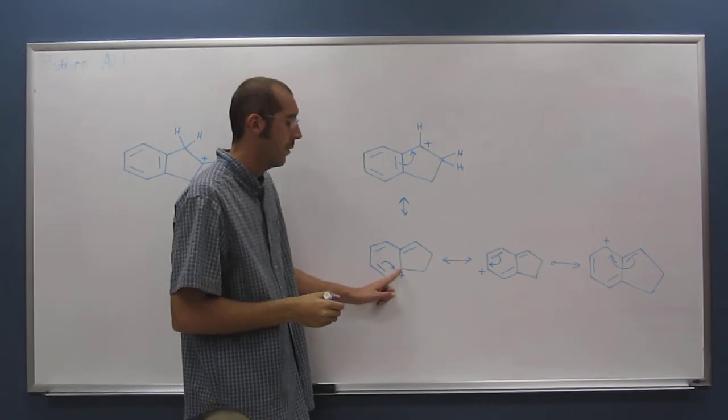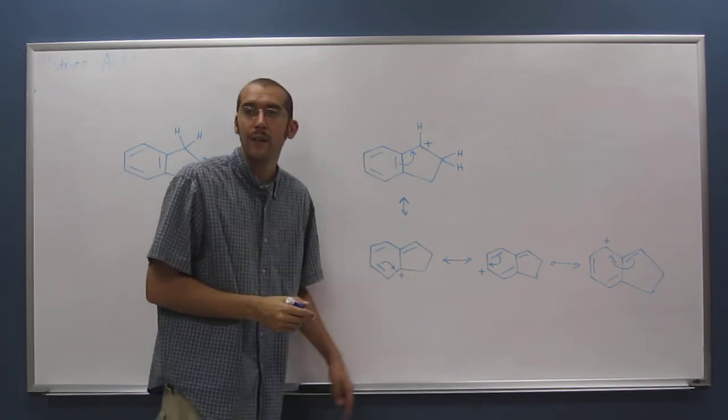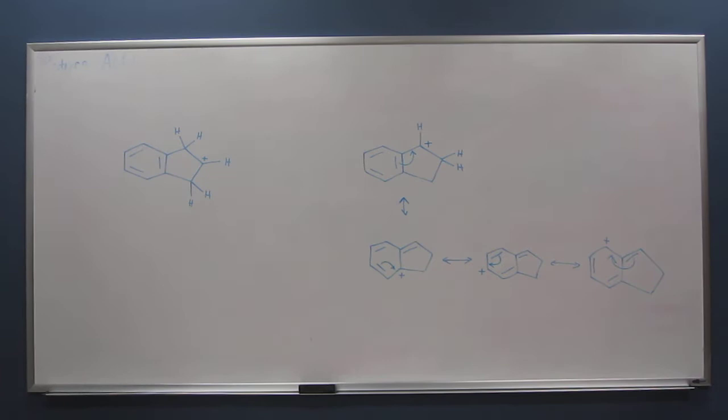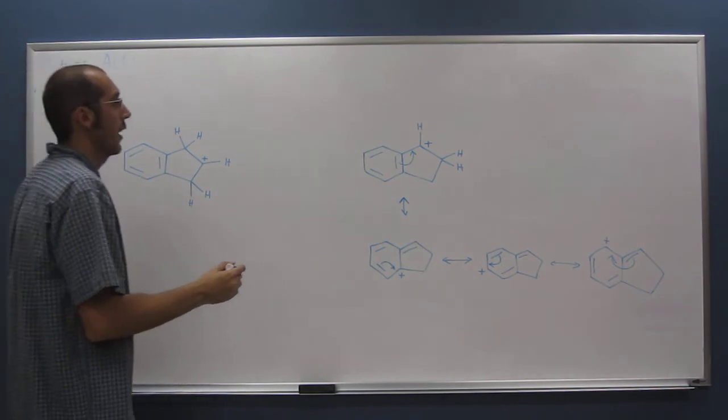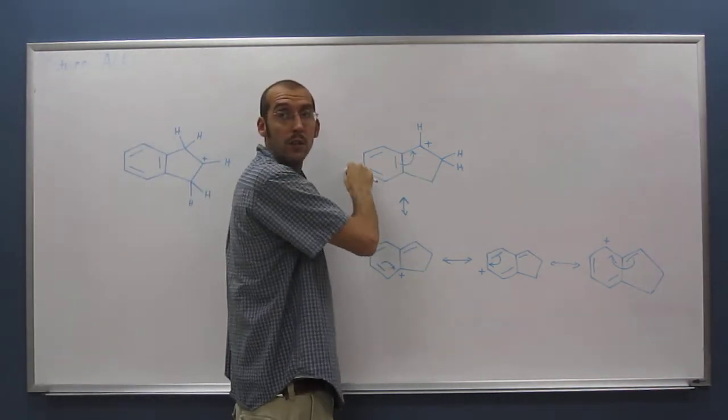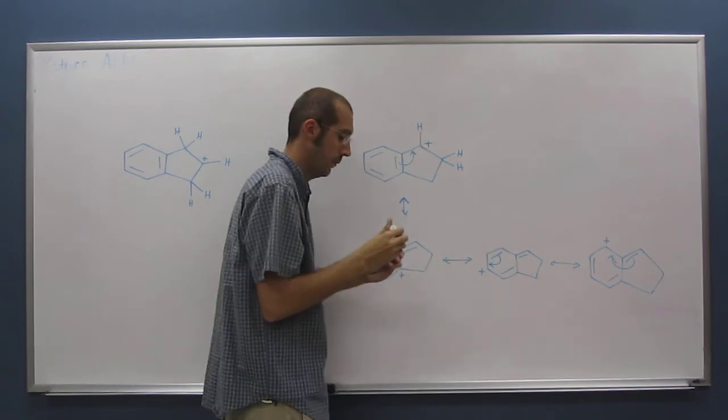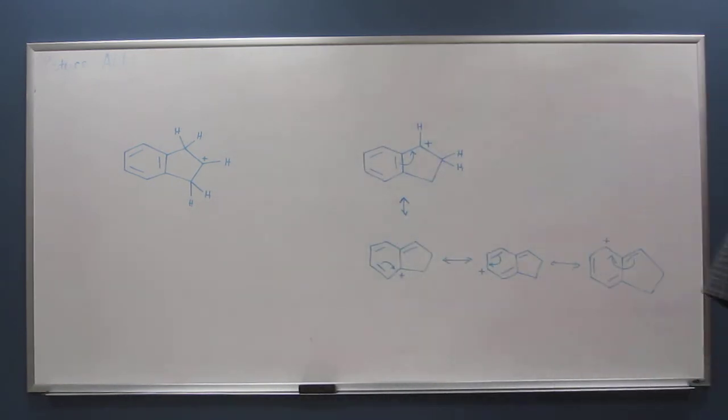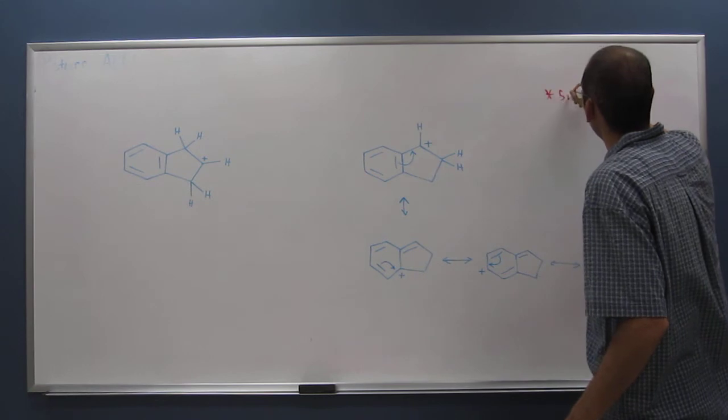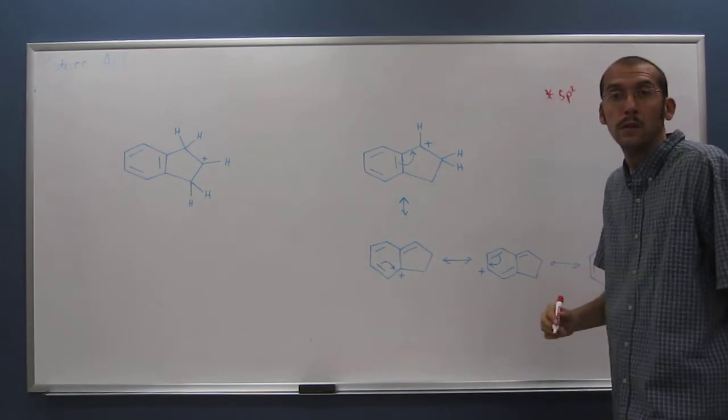And when we do that, now we've created another sp2 carbon. So essentially, what we've got here is a series of these sp2 carbons in a row. This is a good way to ask yourself, can this resonate? We'll mark our sp2 carbons with a little red star. That'll mean sp2.